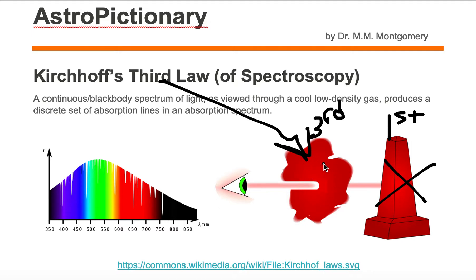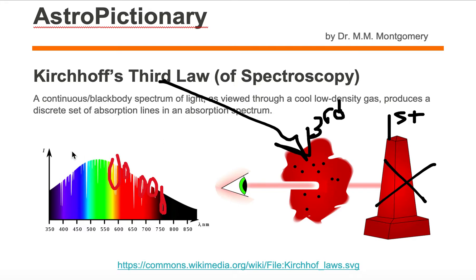This cool gas is made up of atoms, and those particular atoms have very distinct chemical fingerprints of very distinct wavelengths. Those atoms and molecules with those distinct wavelengths are going to steal the light coming from the black body spectrum. And what we end up with are these stolen lines, these stolen wavelengths, which you see as white. So the cool gas stole the light from the continuous black body spectrum.